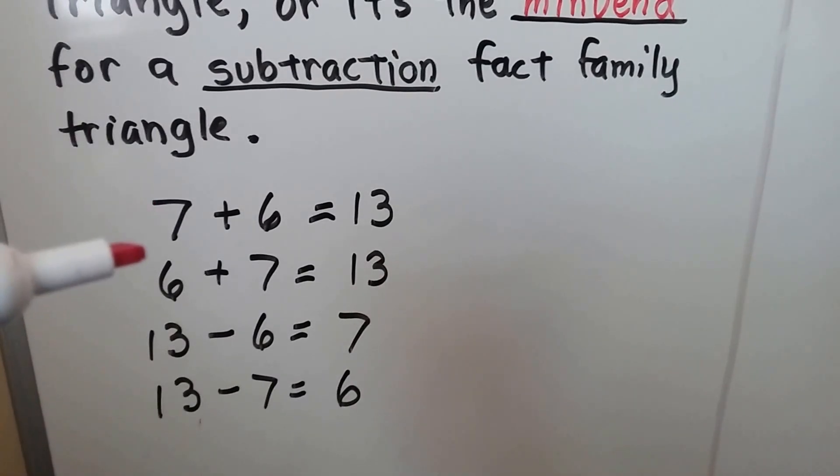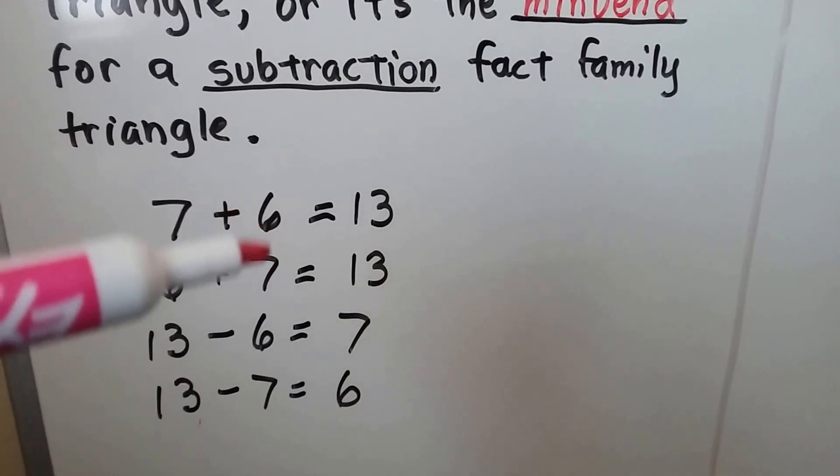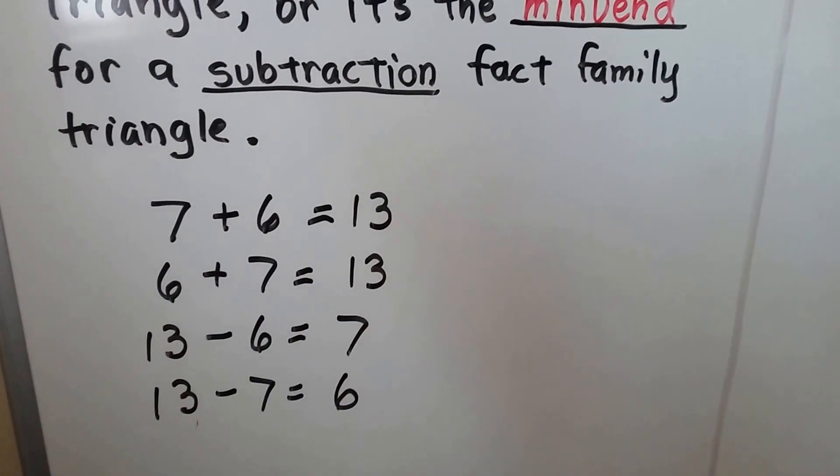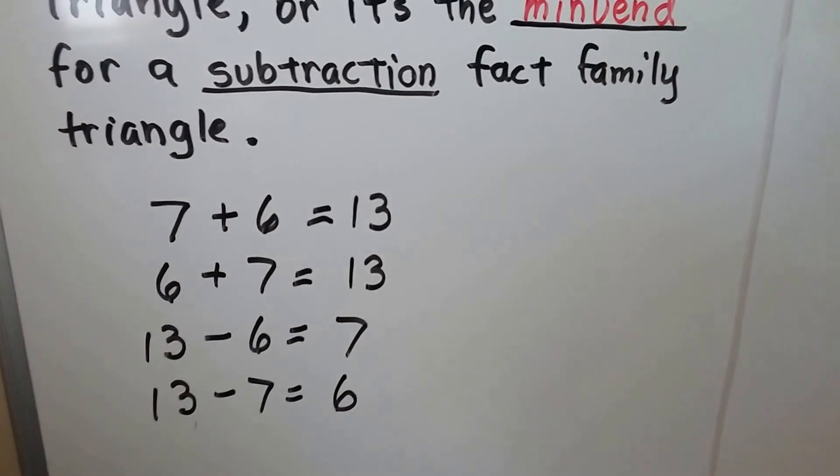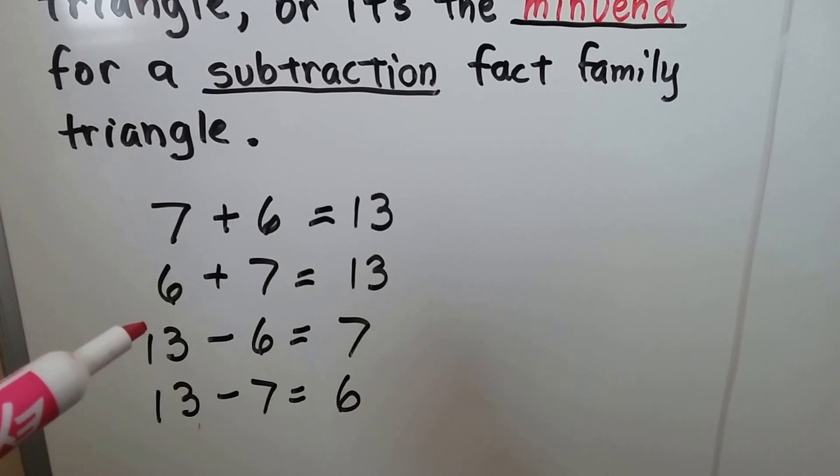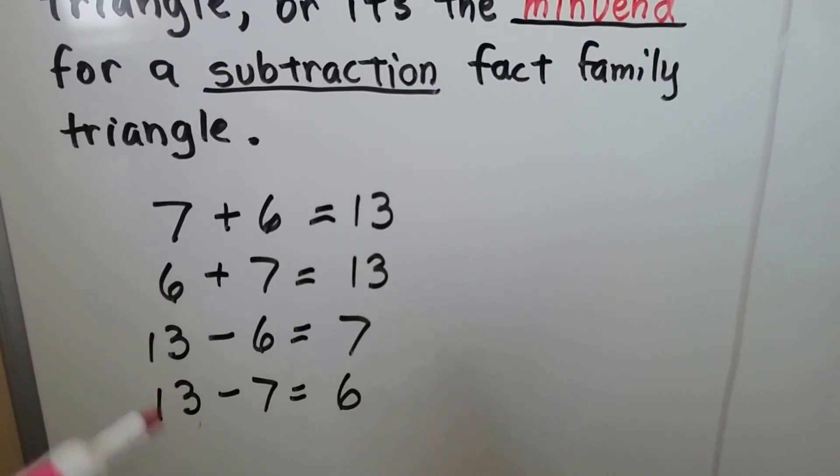Seven plus six is thirteen or six plus seven is thirteen. We can switch places with them. The commutative property tells us we can do that. We can also have thirteen minus six equals seven or thirteen minus seven equals six.